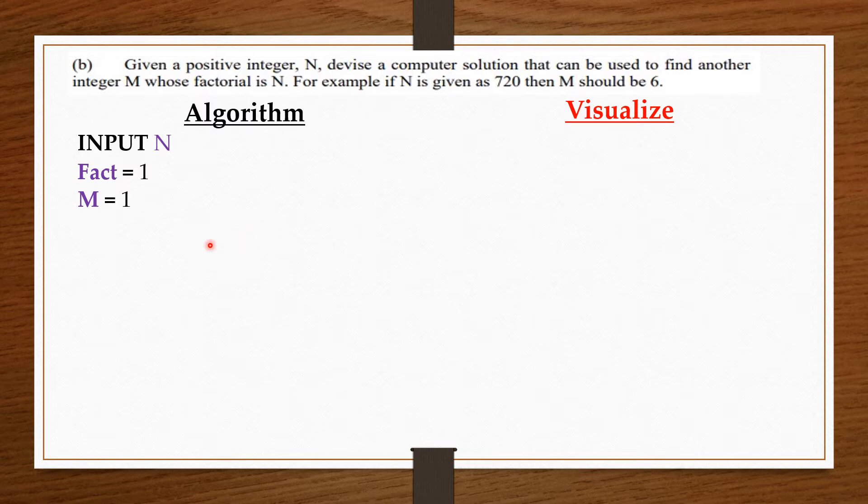Now, the idea we are going to use is that, since we are given a bigger number like 720, and we know factorial is 1 times 2 times 3 times 4 times 5 times 6 onwards, what we are going to do is start from 1 and then multiply 1 by 2, 2 by 3, like that.